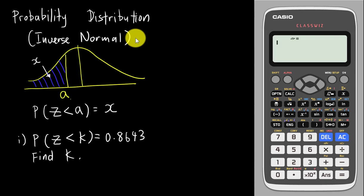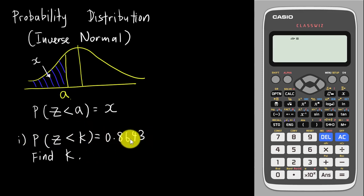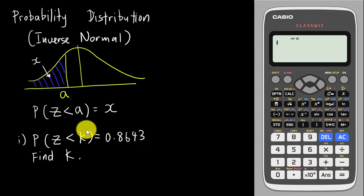So let's say you have an example like this: P(Z < k) = 0.8643. This kind of question doesn't give you an exact value — instead it gives you the probability, which is the area of the bell shape diagram, and asks you to find k. Normally with an old Casio calculator there's no way to solve this.